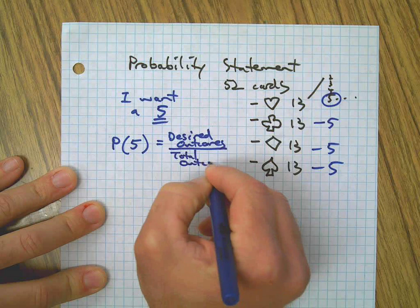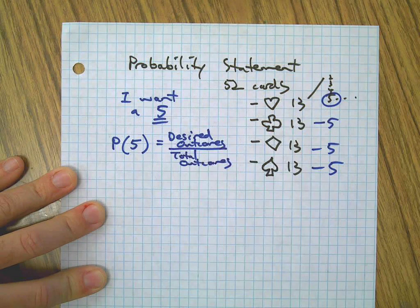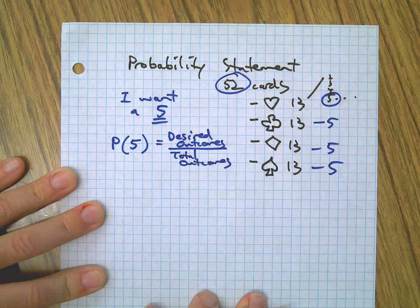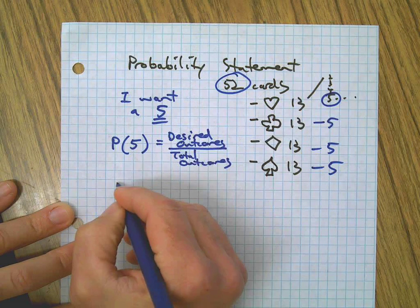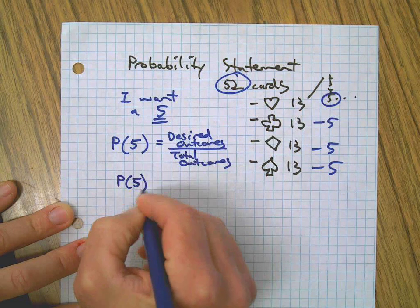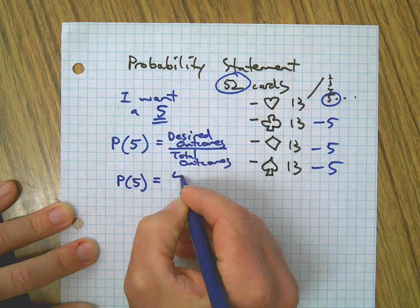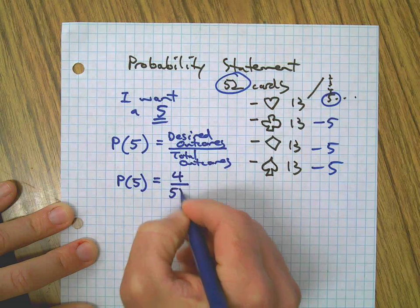And the total number of outcomes is 52 as we already talked about. So the probability statement for me wanting a 5 would look like this: probability of a 5 is 4 out of 52.